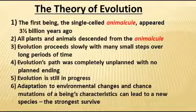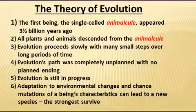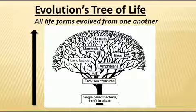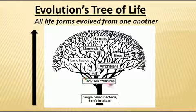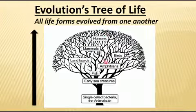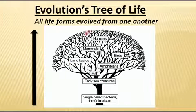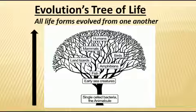To understand this visually, evolutionists use what they call the tree of life. At the base of the tree is a single cell — the animalcule. Over time, early sea creatures appeared, then fish, amphibians, land lizards, birds, mammals, and humans, with all other subtypes of species evolving as time proceeds, ending with humans at the top. This represents the general idea of things getting more and more complex over time without a defined plan for the endpoints of these changes.